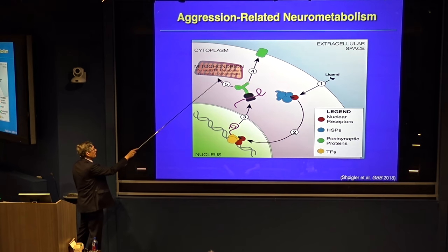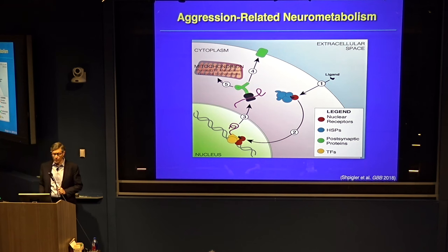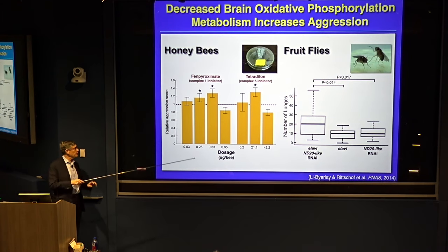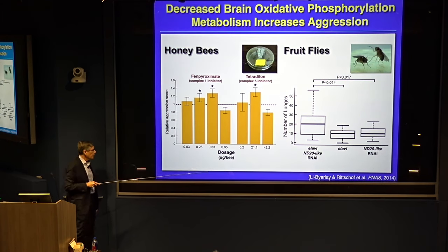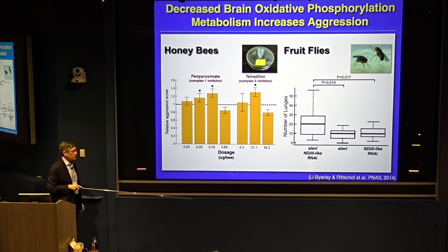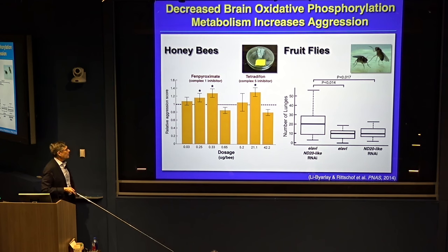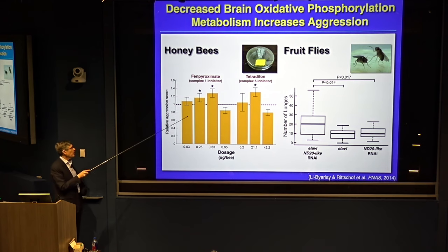The key finding was changes in mitochondrial function associated with both mitochondrially encoded and nuclear encoded genes. We tested this functionally and pharmacologically in honeybees. Claire Richoff, former postdoc now at the University of Kentucky, used specific inhibitors of complex 1 and complex 5 — exactly where gene expression data told us the action was — and showed that pharmacologically treating bees with these oxphos inhibitors increased aggression, another gain-of-function type result.